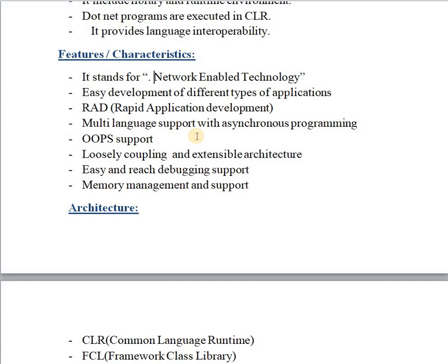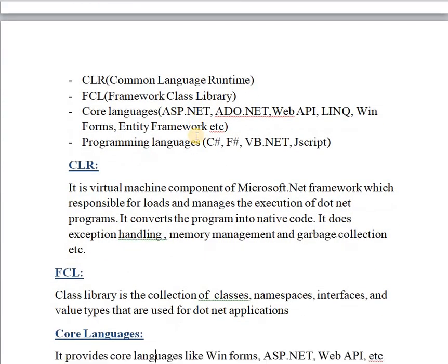Now let's look at the architecture of .NET. The overview includes four main parts: first, CLR — Common Language Runtime; second, FCL — Framework Class Library; third, core languages such as ASP.NET, ADO.NET, Web API, LINQ, WinForms, Entity Framework; and fourth, programming languages such as C#, F#, VB.NET, and JScript.